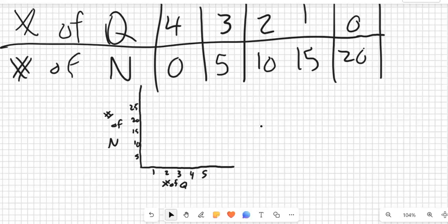So let's see. Zero quarters, twenty nickels. One and fifteen. Two and ten. Three and five. Four and zero. Great. All right, so I can go from here to try and write my equation.